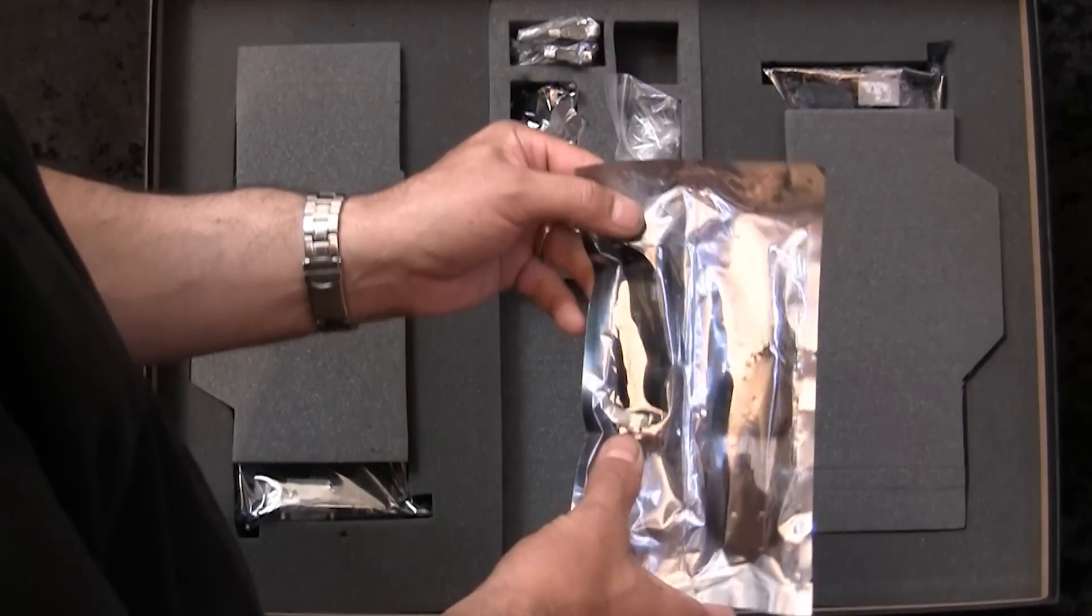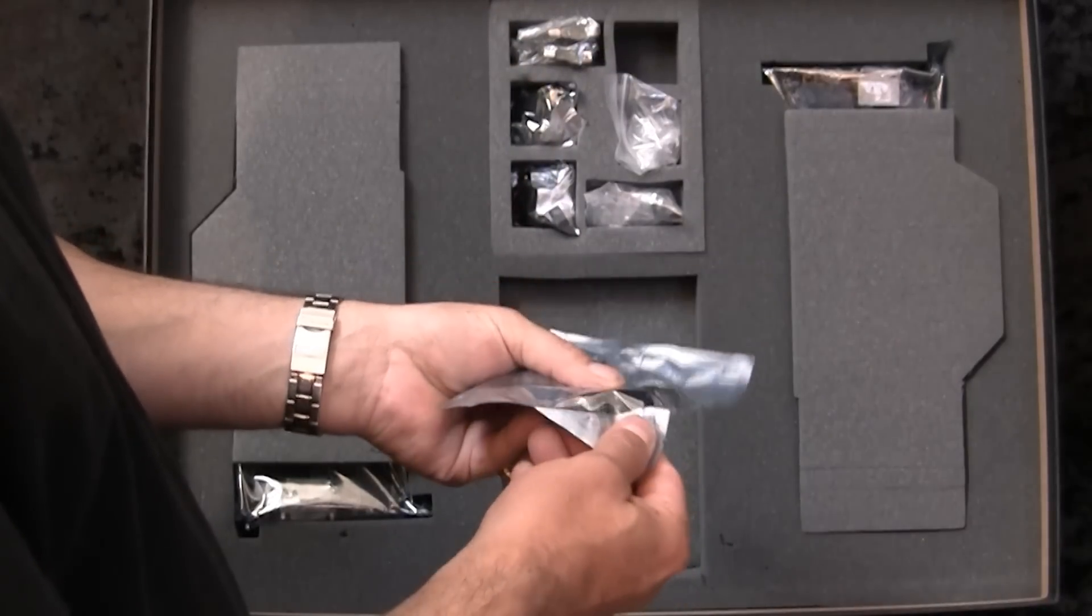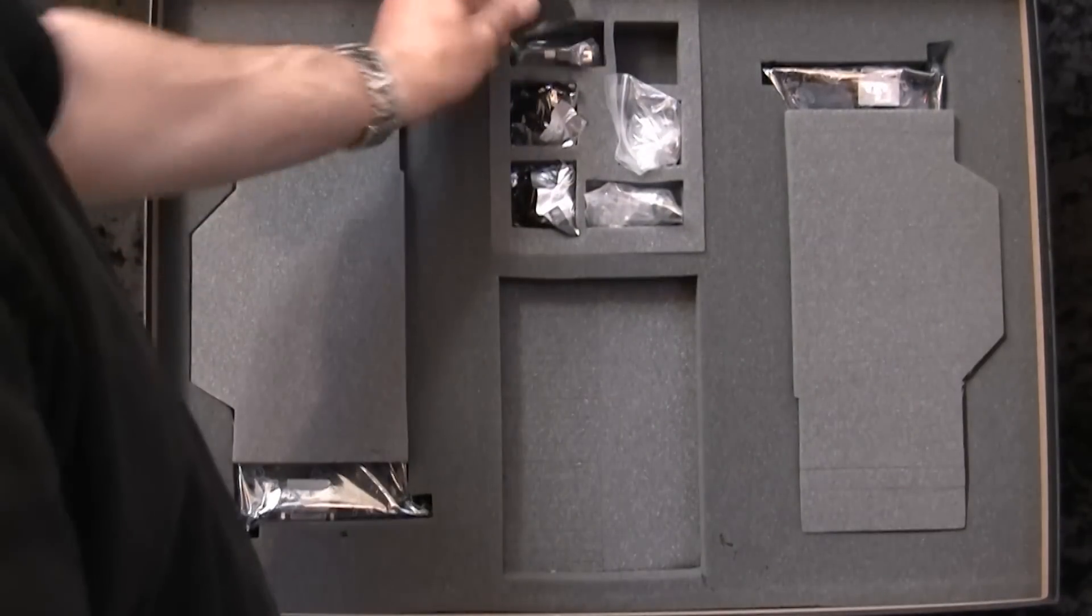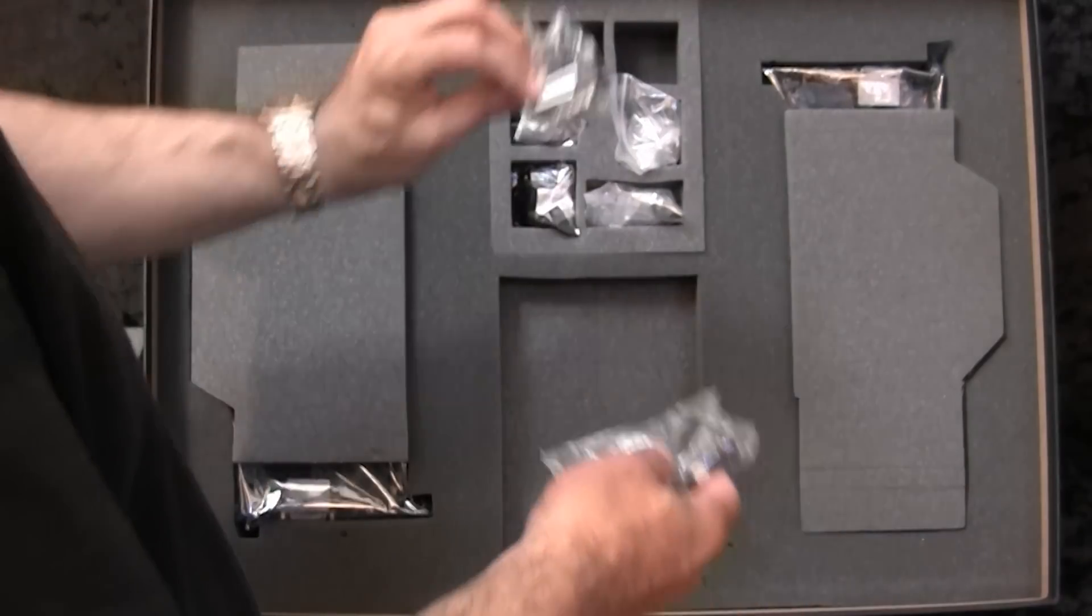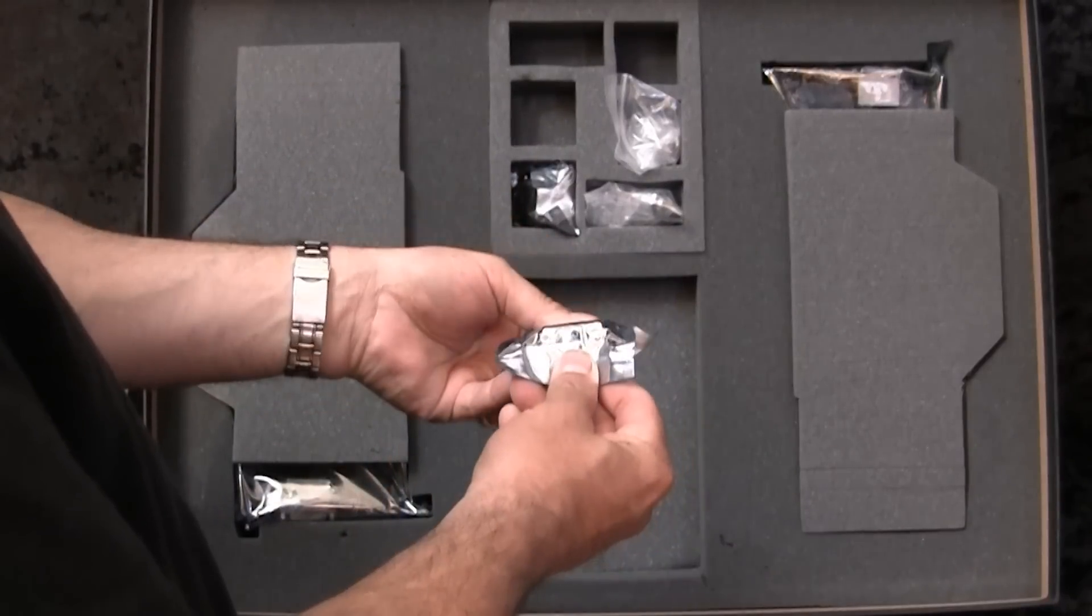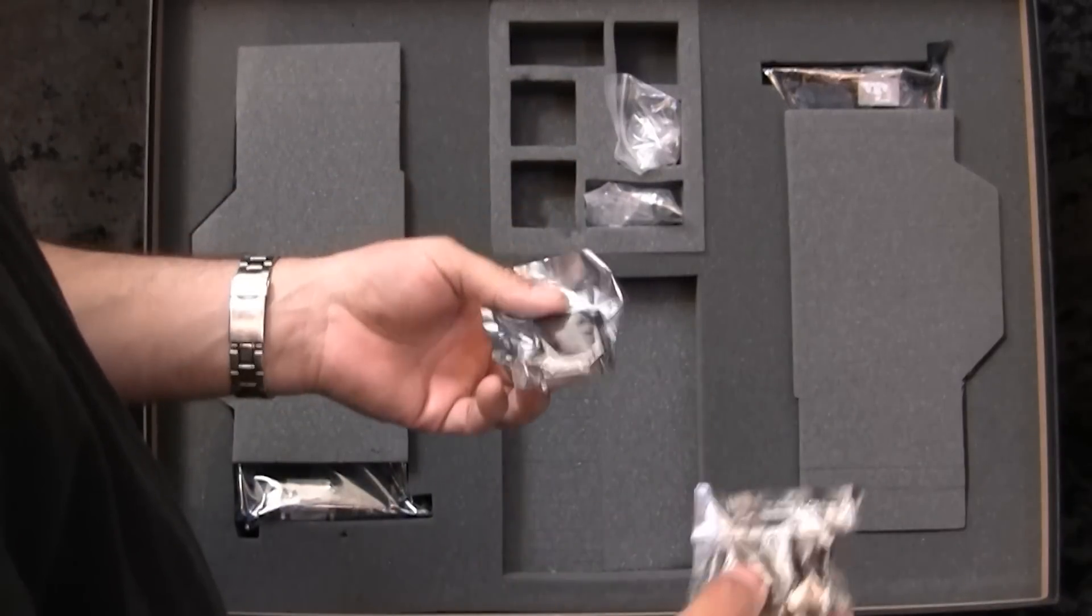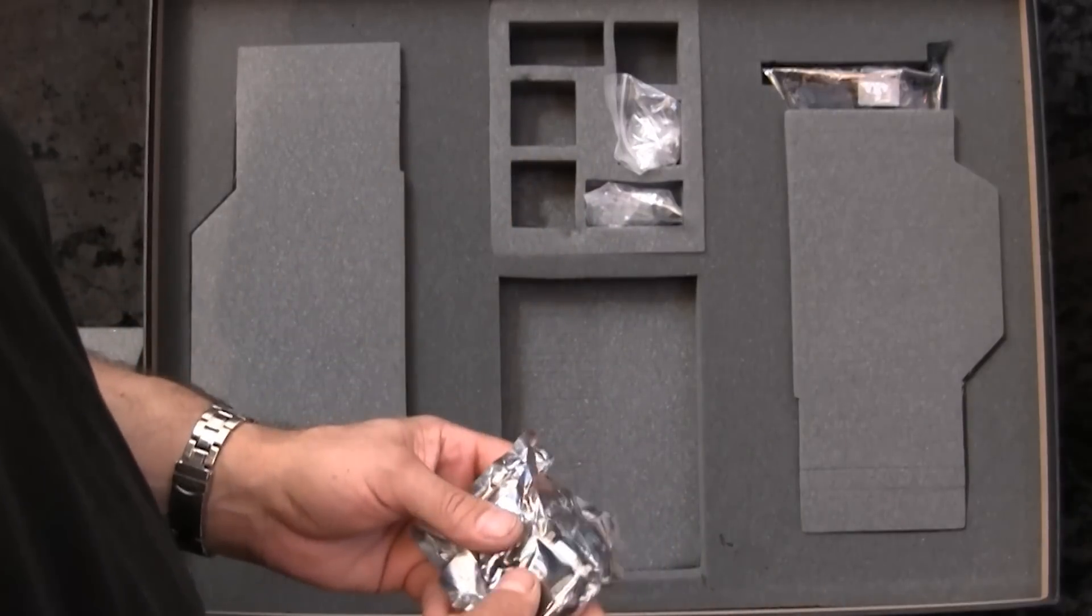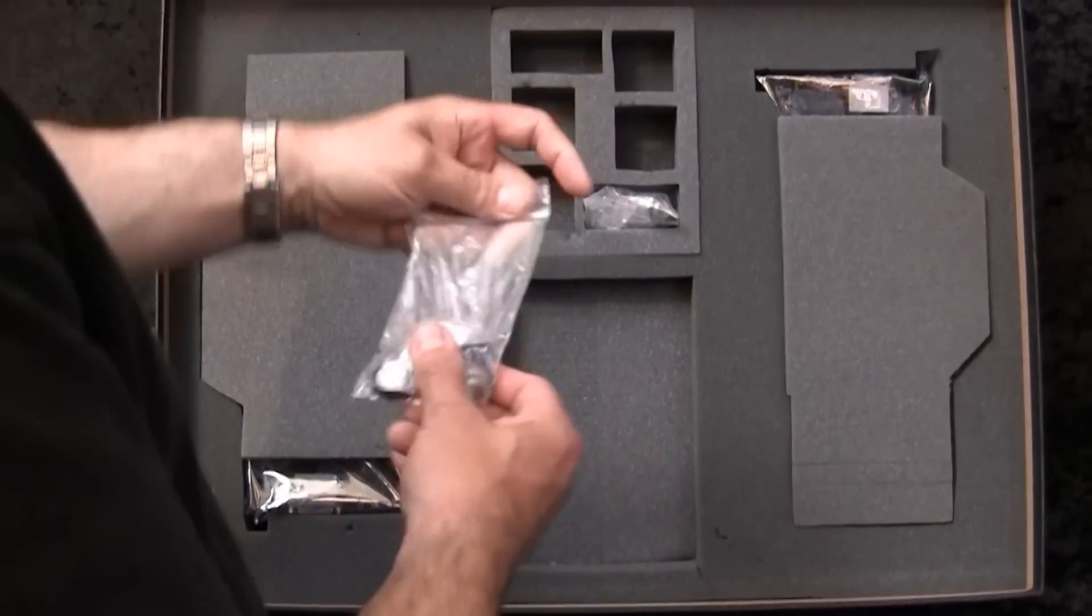Here we have the SLI bridge and then two mini display port to HDMI adapters. Then we have DVI to HDMI, we have two of those. Then here we have DVI to VGA, two of those. Again, when is someone going to use a VGA adapter? If you're going to buy these cards, most likely you've got a monitor that doesn't even have VGA, but just in case they provide those.